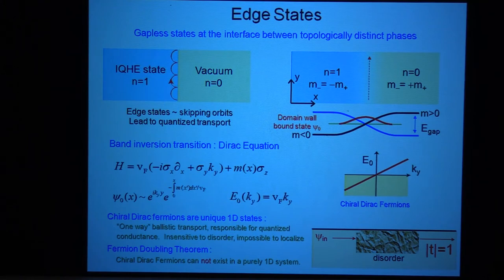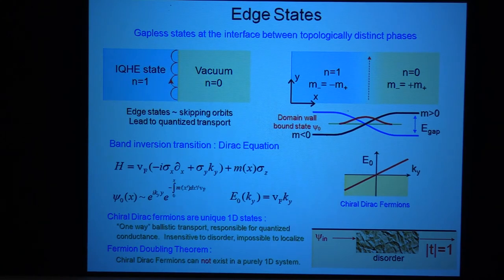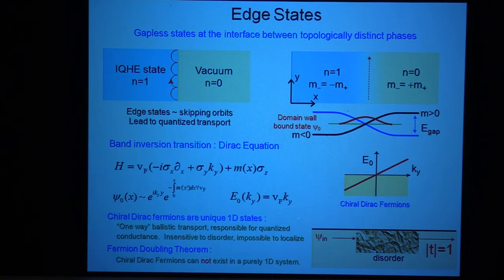This is important. Having a mode like this is something that can't happen in a purely one-dimensional system. There's a theorem called the fermion doubling theorem, which was once explained to me as simply the fact that what goes up must come down. If you had a one-dimensional band structure, it's going to be defined on a circle. If you have a band that comes up, it has to connect back to itself so it has to come back down. In a purely one-dimensional system, the chiral fermions have to come in pairs. What the quantum Hall effect accomplishes is spatially separating the right movers and the left movers.